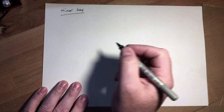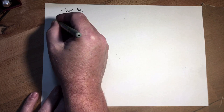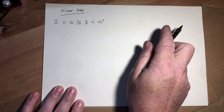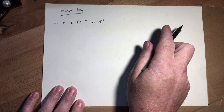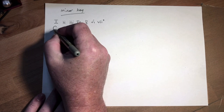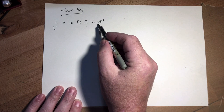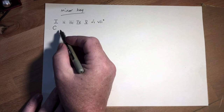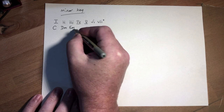Let's take a key — I'll do it in two keys so you can see how it works through all 12 keys. We're going to do this in the key of C major, and I'm writing the Roman numeral chords for the key of C major. Uppercase Roman numerals mean a major chord, lowercase Roman numerals mean a minor chord, and there's this odd one that looks like a minor chord with a degree symbol — that is a diminished chord.